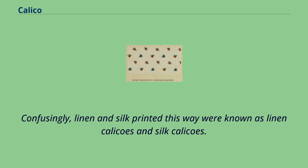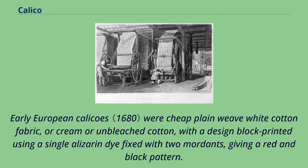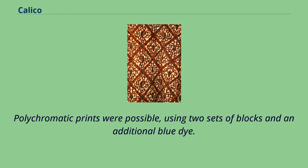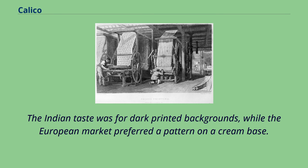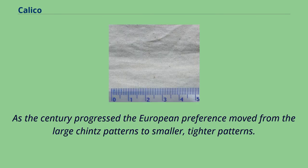Confusingly, linen and silk printed this way were known as linen calicos and silk calicos. Early European calicos were cheap plain weave white cotton fabric, or cream or unbleached cotton, with a design block printed using a single alizarin dye fixed with two mordants, giving a red and black pattern. Polychromatic prints were possible using two sets of blocks and an additional blue dye. The Indian taste was for dark printed backgrounds, while the European market preferred a pattern on a cream base. As the century progressed, the European preference moved from large chintz patterns to smaller, tighter patterns.